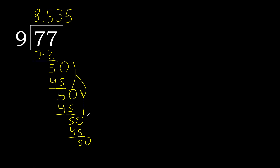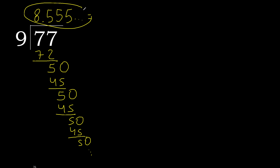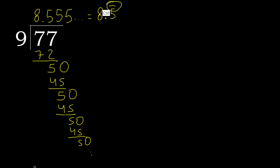This repeats. Therefore, 77 divided by 9 gives a repeating decimal — 8 point 5, repeat, repeat. After the point: 5 repeating. The answer is 8.555... — it repeats like this.